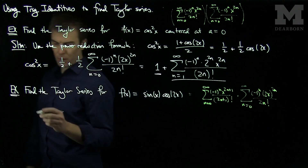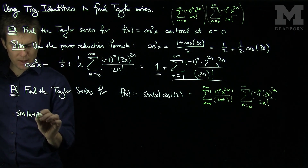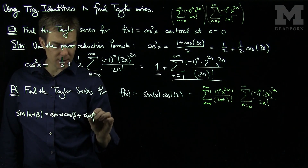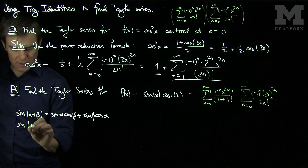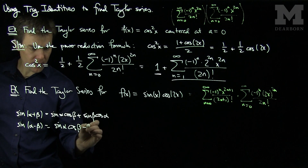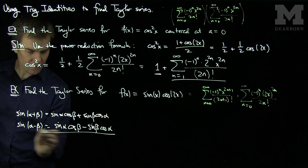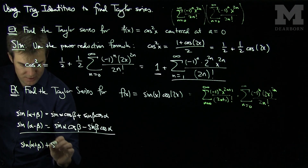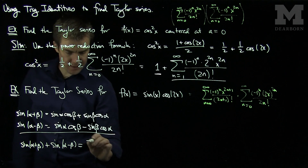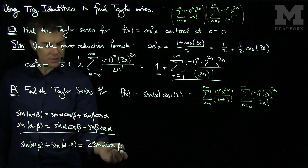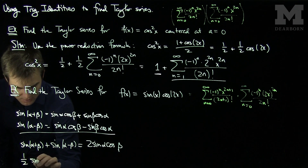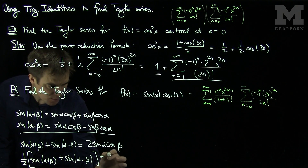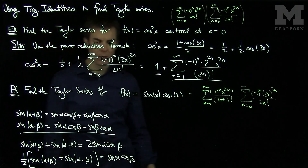Rather, we can use the product-to-sum formula. Recalling that sin(α+β) = sin(α)cos(β) + sin(β)cos(α) and sin(α−β) = sin(α)cos(β) − sin(β)cos(α), adding these gives sin(α+β) + sin(α−β) = 2sin(α)cos(β). Therefore, sin(α)cos(β) = (1/2)[sin(α+β) + sin(α−β)], which is the product-to-sum formula.